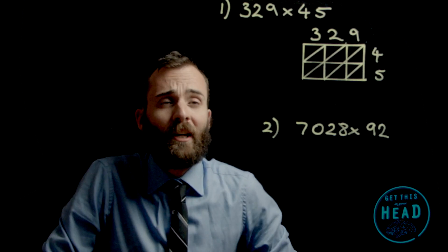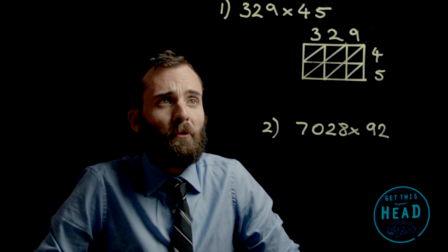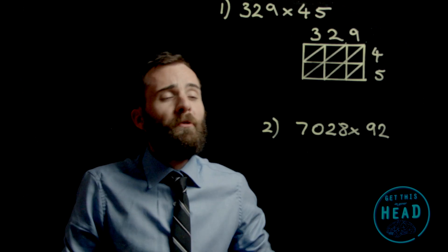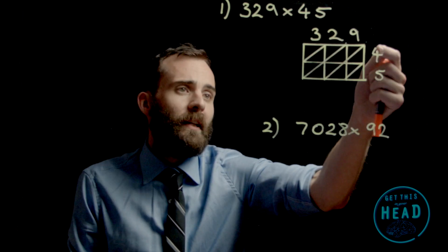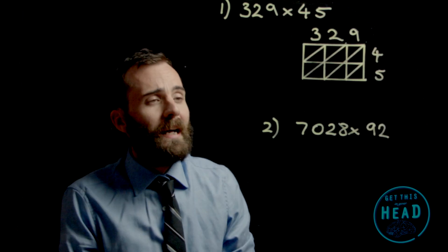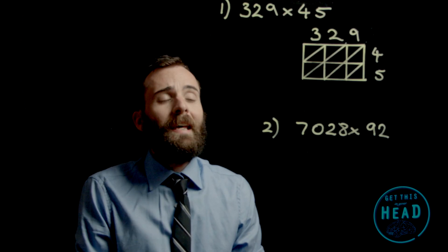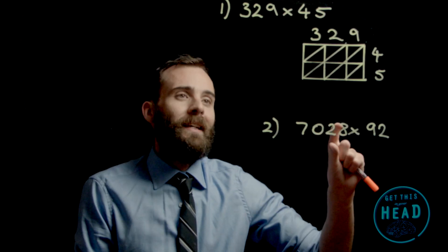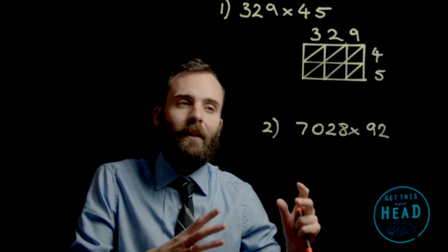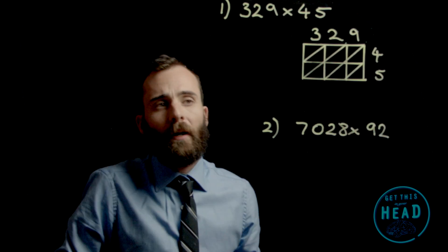The first question is 329 multiplied by 45. I've drawn out a grid with 329 along the top and 45 down the side. It's like the grid method, except we're not putting in 320 and 9 and 40 and 5—it's just the 3, 2, 9, the 4, and the 5.